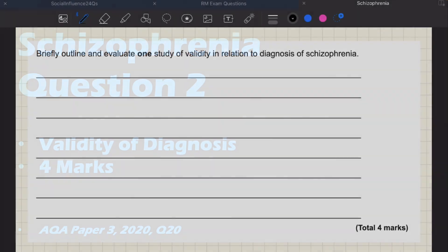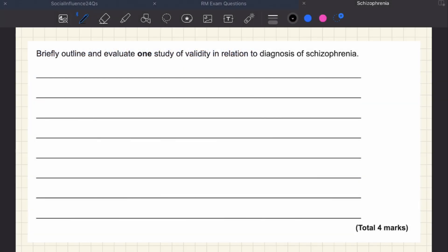This particular question is about the validity of diagnosis and is taken from the 2020 Paper 3. I think this is a fairly tricky question because it requires you to know a study specifically about validity, which in itself isn't awful, but it also wants you to evaluate that specific study. Most textbooks don't specifically offer an evaluation point for a study on validity for schizophrenia, so you need to think outside the box and use your psychology knowledge to offer some AO3 content.